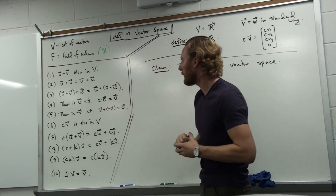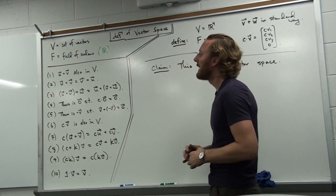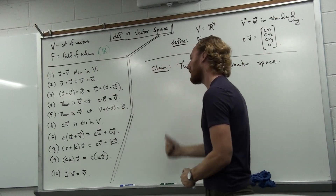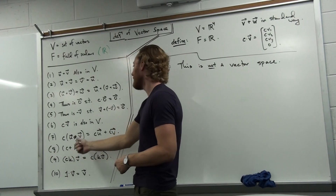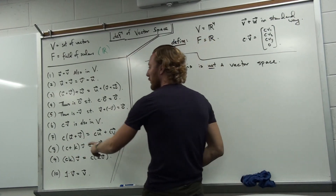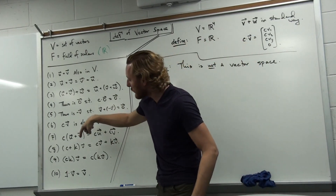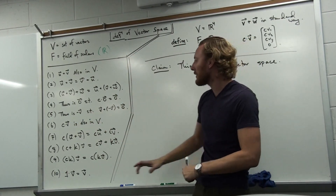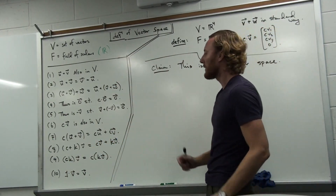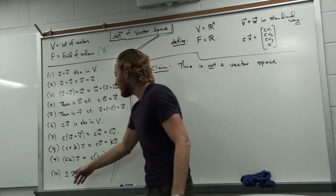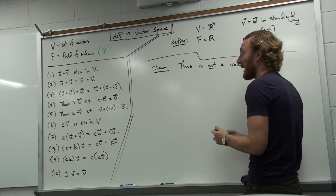There should be a zero vector which multiplies by any scalar to be zero. Every vector should have an opposite which adds to the zero vector. Any number times any vector should also yield a vector. You should be able to distribute scalars across vectors in two ways: one, a scalar times two vectors, and the other, two scalars times a vector. You should also be able to multiply two scalars with a vector in any order, and there should be a one — just a number — which multiplies every vector to return that vector.